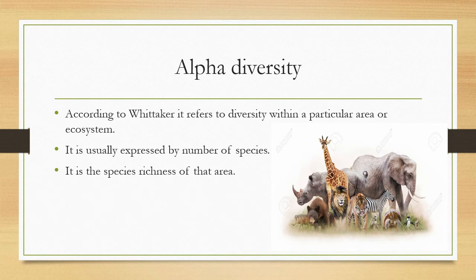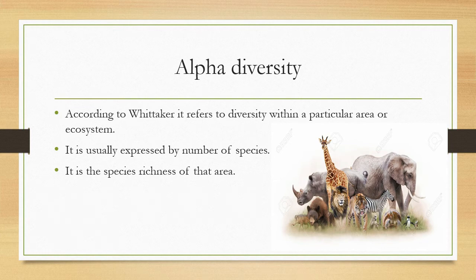In this picture, you can see there's an elephant, a giraffe, a rhino, and two other organisms found in that particular area. What is the alpha diversity of that region? Just count the different types of animals here — one, two, three... there are eleven particular species. So the alpha diversity of this region is 11.